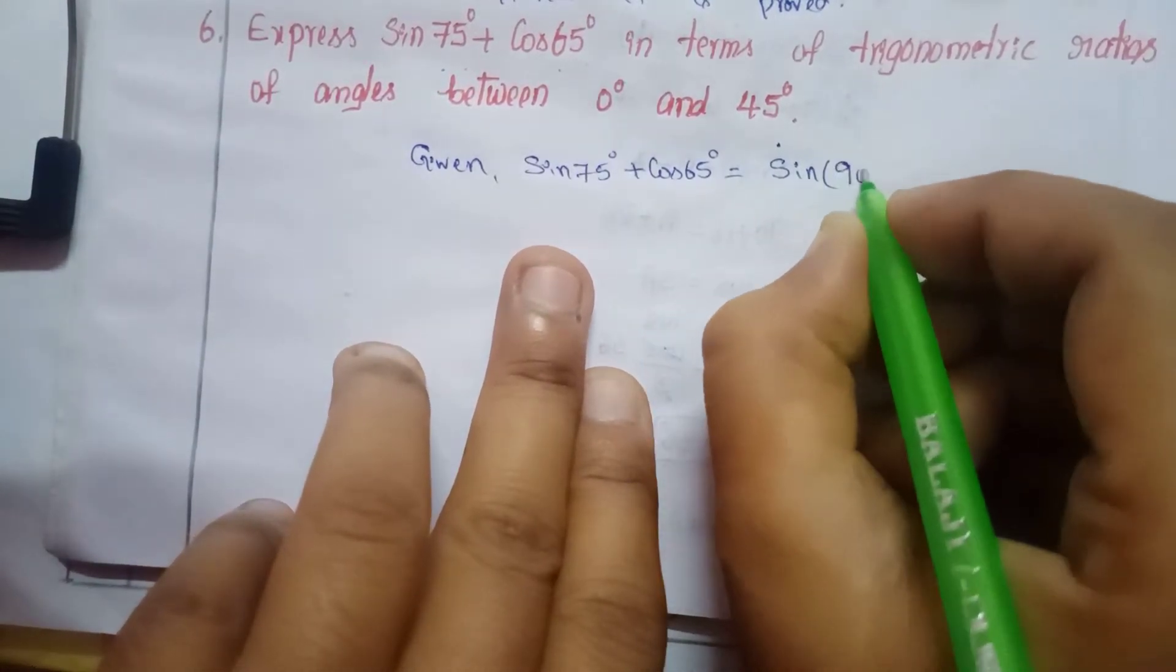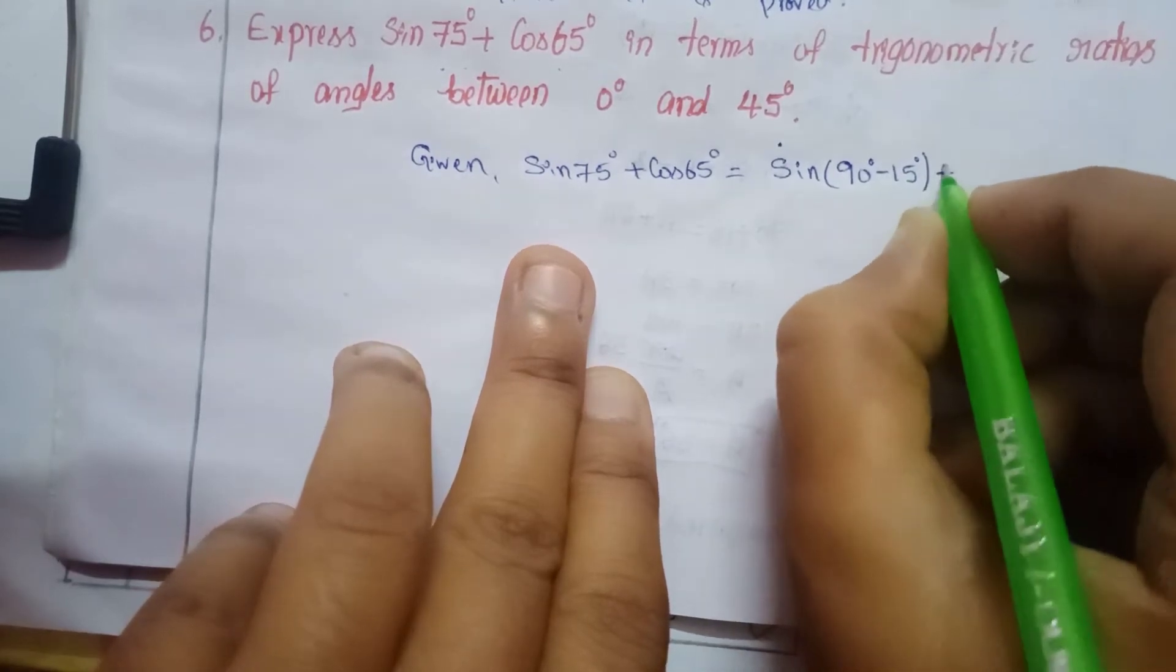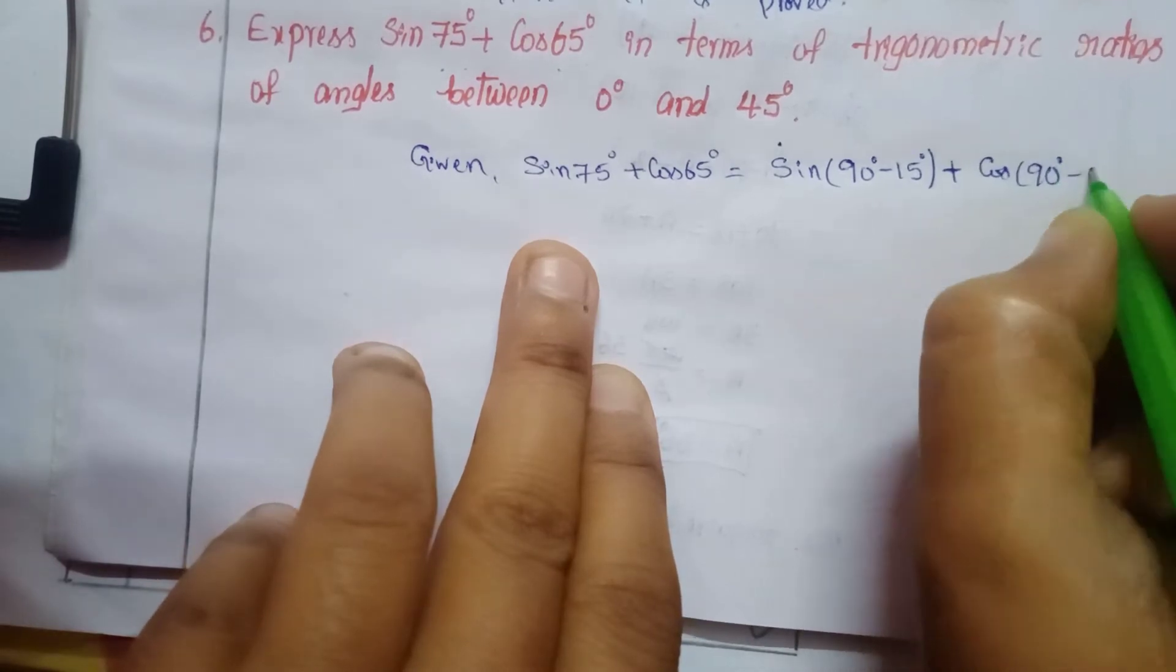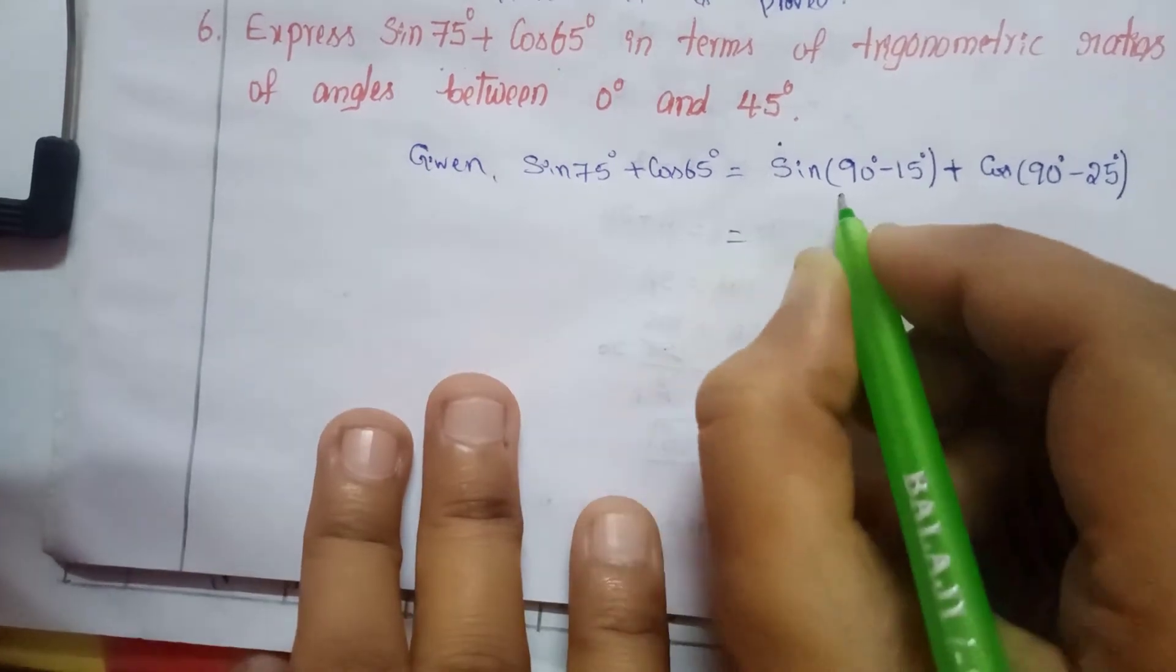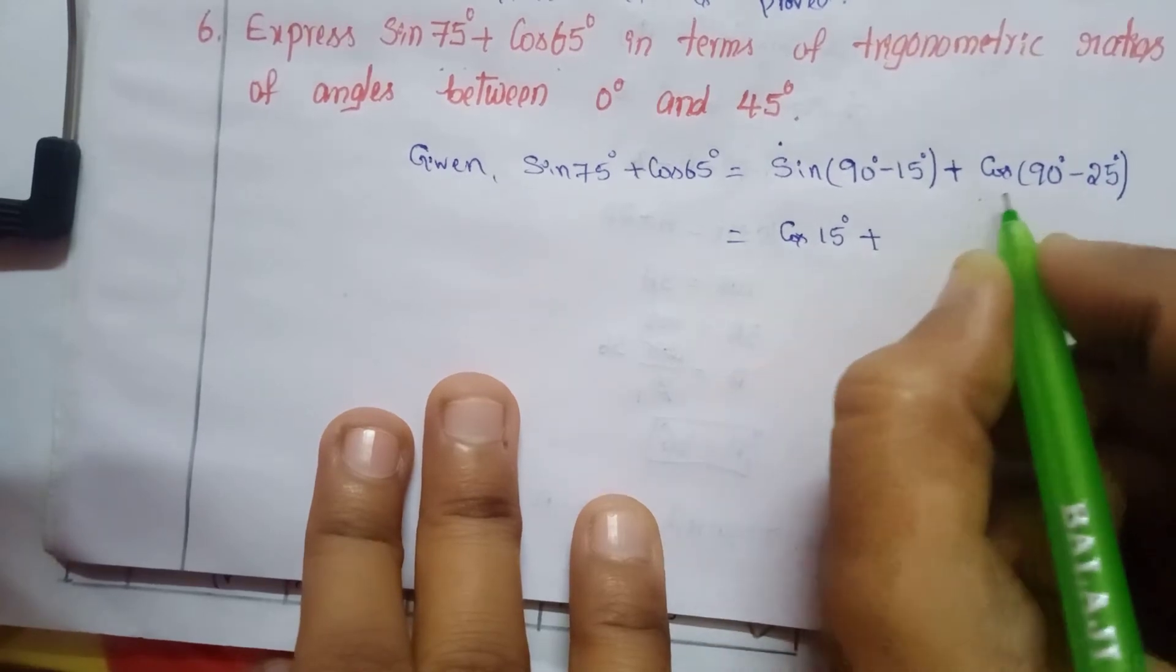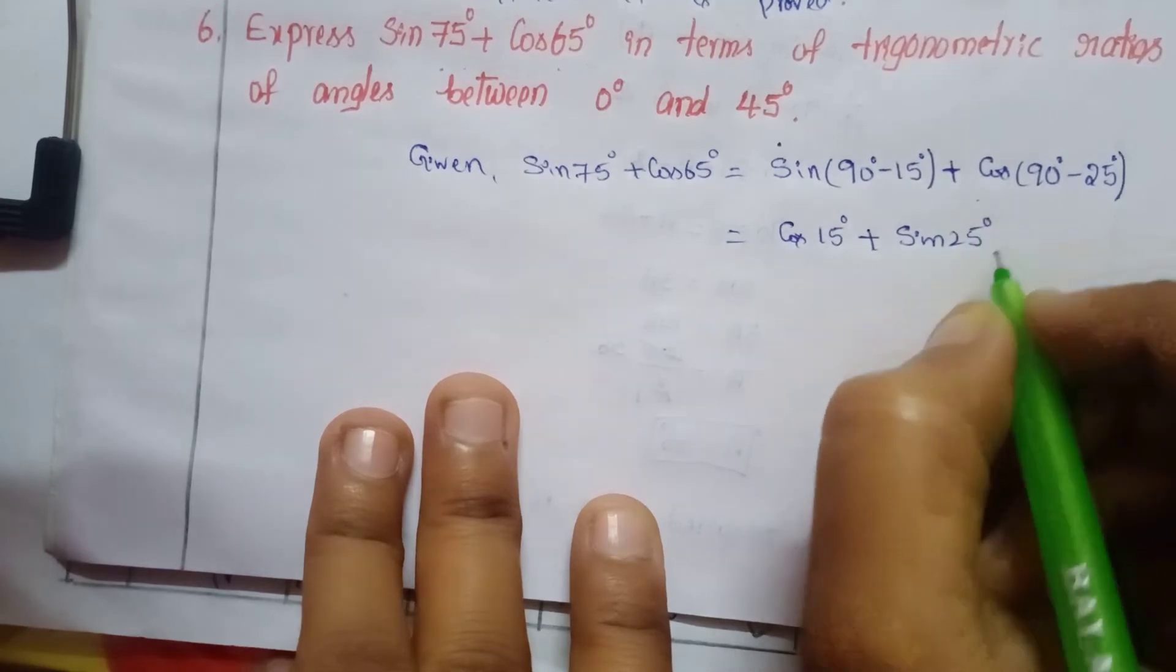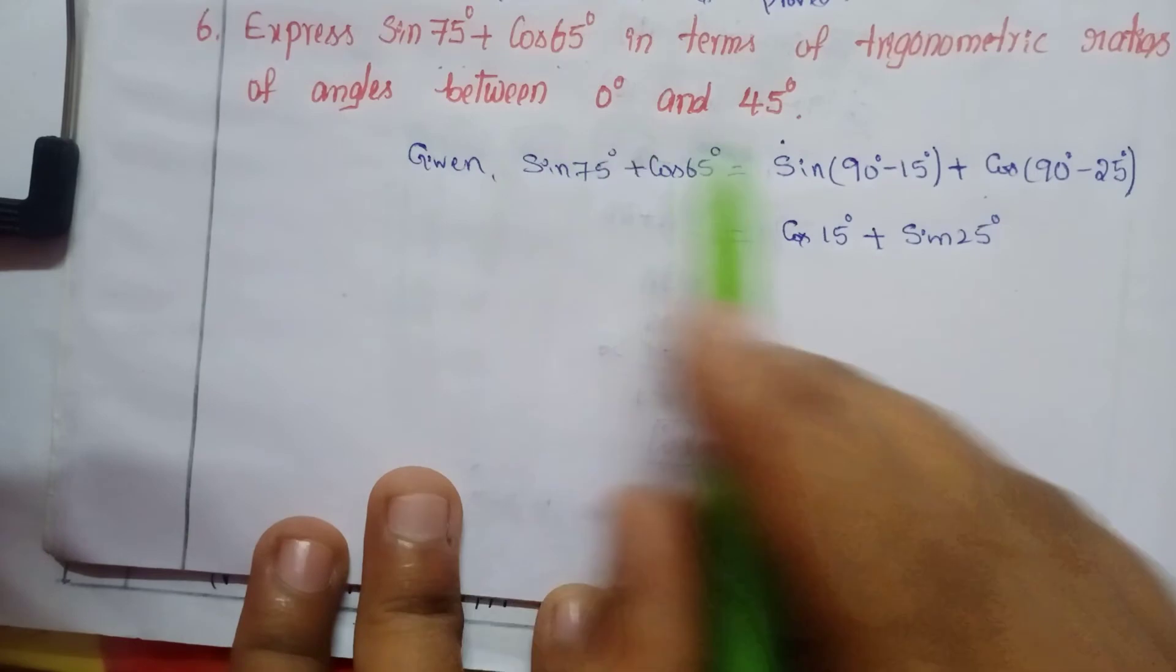sin(90° - 15°) plus cos as cos(90° - 25°). Using the identities sin(90° - θ) = cos θ and cos(90° - θ) = sin θ, we get cos 15° + sin 25°.